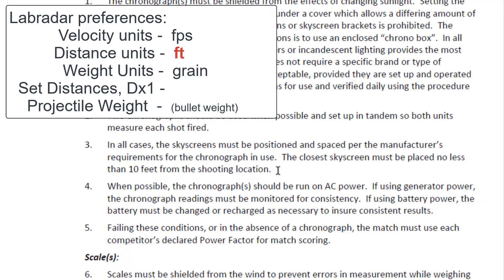You can set 5 distances you want to record velocity at. As it records and produces your files, you'll see that it automatically gives you a velocity at distance 0, which is considered muzzle velocity, and then velocities at the 5 distances you set, known as DX1 through DX5. When you read the Lab Radar instructions, you will see that power factor is calculated based on the distance you set in DX1. So in the Lab Radar preferences, we need to set distance units to feet and set DX1 to 10. At this point, let's go into the Lab Radar unit and set those preferences.